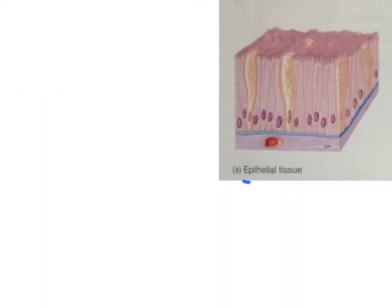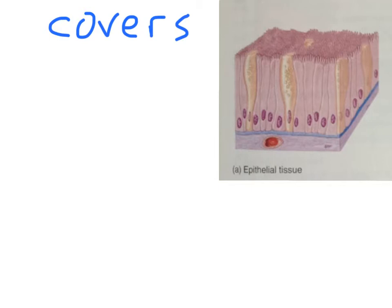Epithelial tissue is a covering and lining tissue that is found throughout the body in every organ system. It covers the surface of the body and is a major part of the skin, as well as serves as a cover to organs. It also lines hollow organs like the stomach, intestines, and blood vessels. It's also found within cavities, lining the pericardial cavity of the heart and pleural cavity of the lungs, as well as ducts.